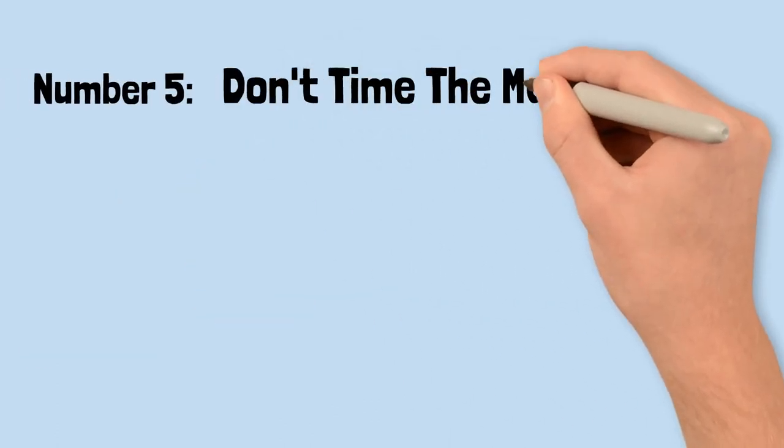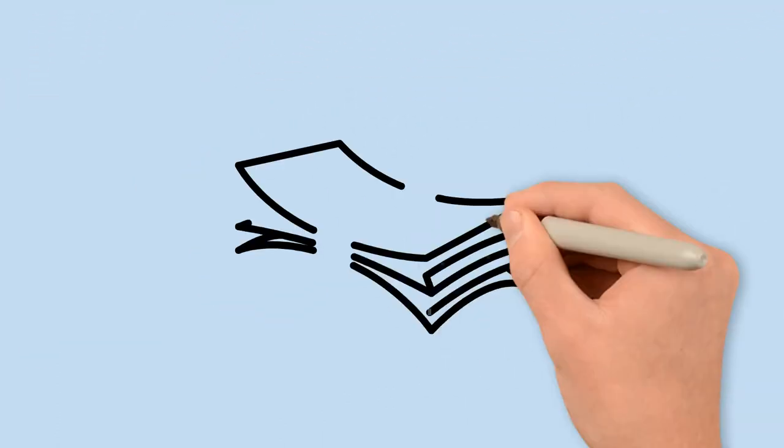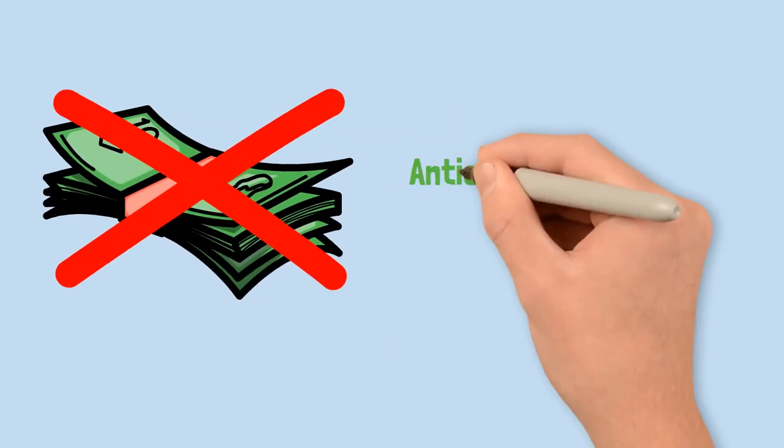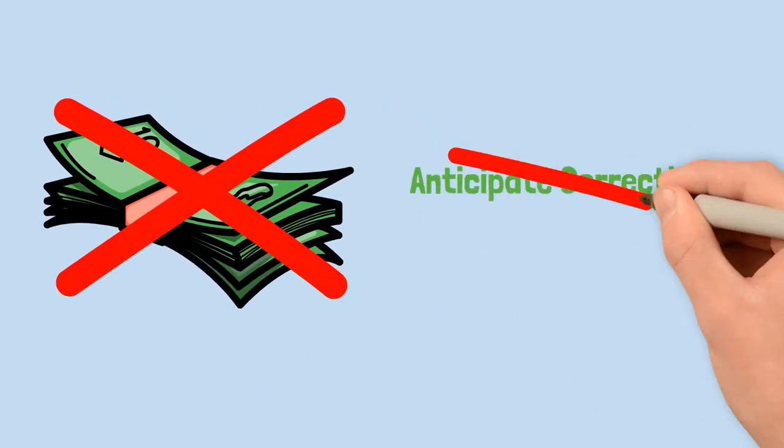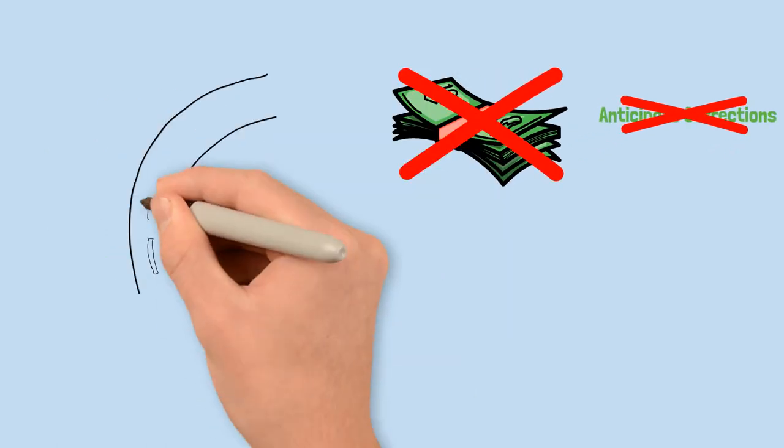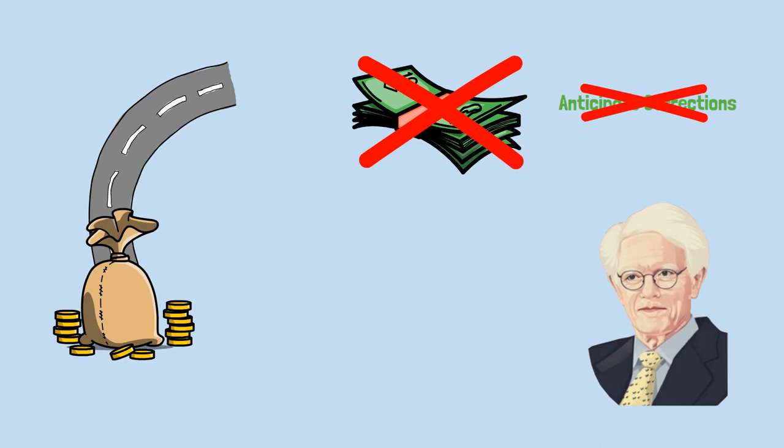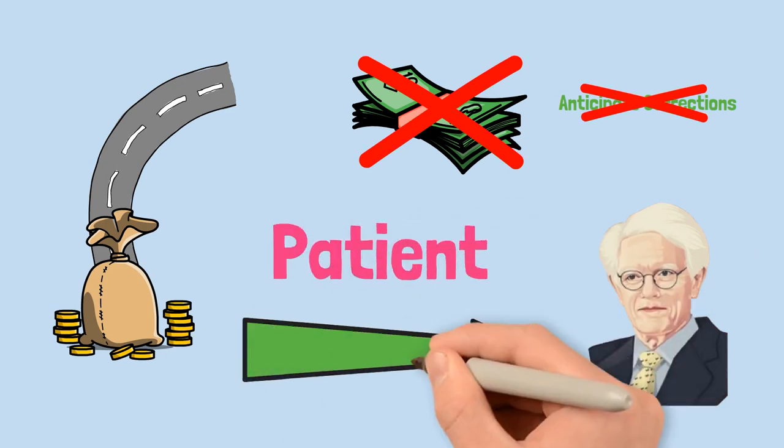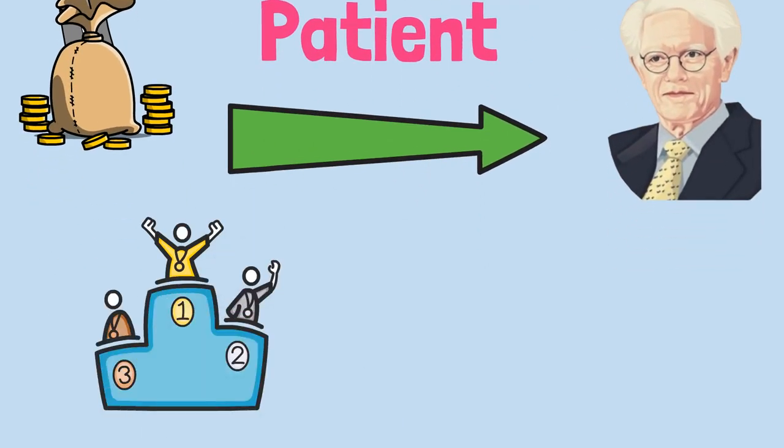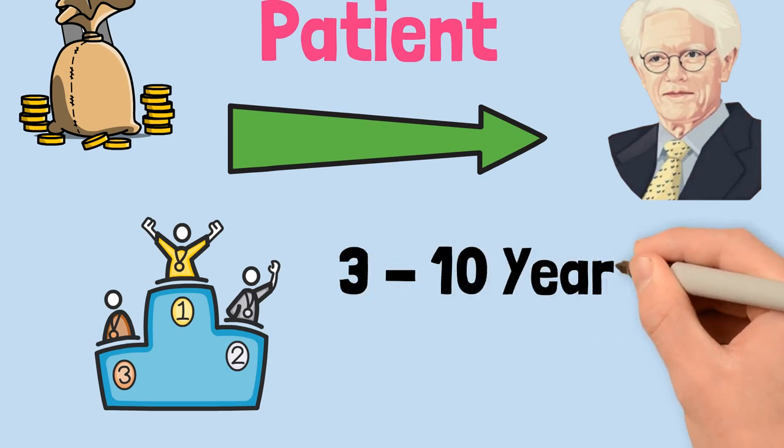Number 5: Don't time the market. Far more money has been lost by investors preparing for corrections or trying to anticipate corrections than has been lost in corrections themselves. The road to riches in the stock market is not a quick one. Lynch knows that big gains are typically the result of a patient long-term approach. The typical big winner generally takes 3 to 10 years to play out.